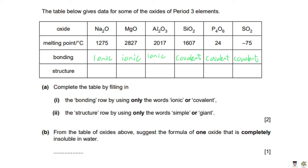For structure: ionic compounds always have a giant structure — a crystal lattice or giant ionic structure without exception. Silicon dioxide is an exception among covalent substances: like diamond and graphite, it is giant covalent, not simple molecular. The phosphorus oxide and sulfur dioxide both have simple molecular structures.